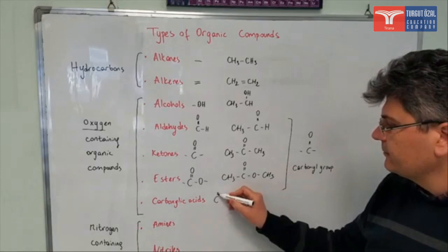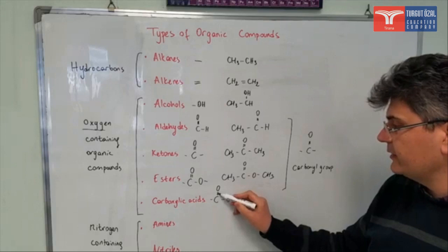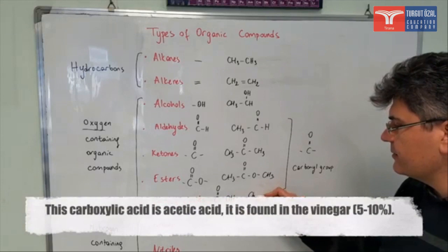Carboxylic acid contains a carbonyl group again, but it also has an OH group connected to it. This carbon atom is already making three connections, so it's going to connect to another radical. So it can be something like CH3-COOH.